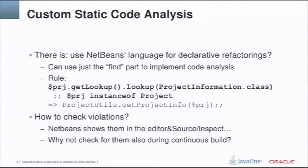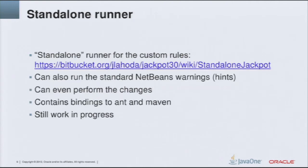What would be better is if we could turn these checks inside the continuous build — then it would run automatically for us. We would see the results for the whole project and the mistakes would be pushed into our face. What we can do is use a standalone runner for the custom rules. There is a wiki page with some details about that.